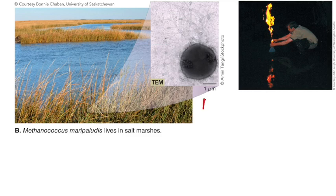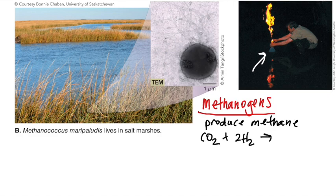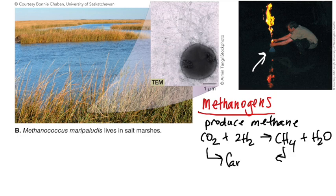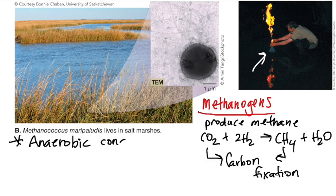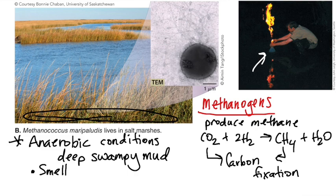The most studied group of archaea are what we call methanogens. These organisms produce the gas methane, which is a combustible gas. They do this by reducing inorganic carbon from CO2 using hydrogen to create methane gas, which is CH4, and water — we refer to the taking of inorganic carbon and putting it into a carbon form as carbon fixation. All methanogens identified to date live in anaerobic conditions, and a lot of them live in places like the deep mud under salt marshes. If you've ever gone to a swamp or marshland, you know there's a distinct smell — that's the methane produced by a variety of methanogens, which people refer to as swamp gases.